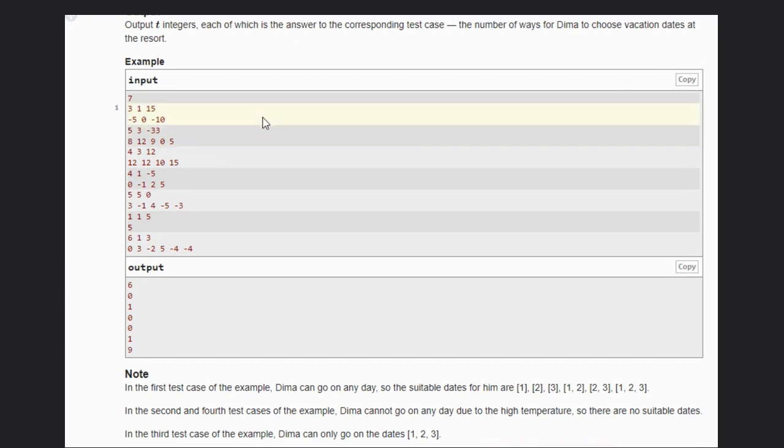We have N as 3, K is 1 and Q is 15. Minus 5 is less than Q, 0 is less than Q and minus 10 is less than Q. All three days are possible.